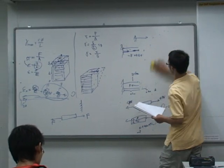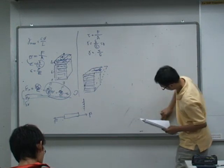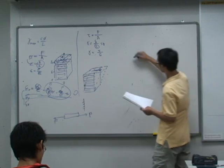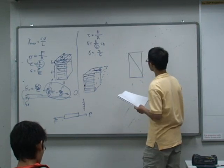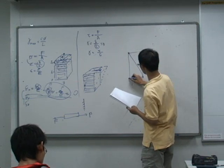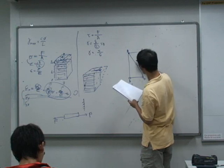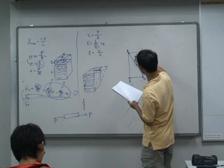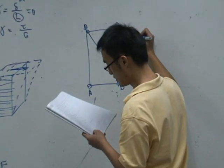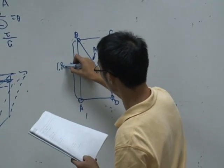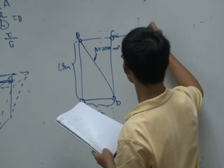One more challenging question, which involves more of a force analysis. So these are all the joints. This is A, B, C, D. So the area, the cross sectional area of this one, is equal to 200 mm, or 2000 mm squared. And the length here is 1.8 meters. Length here, 1.5 meters. So, if I have a force P applied in this direction.